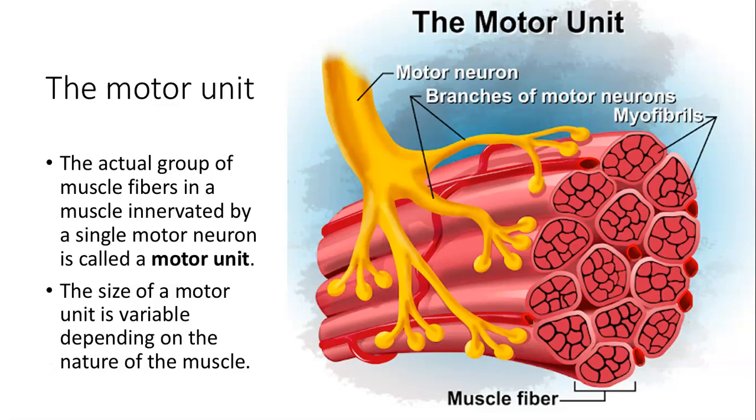A large motor unit is the arrangement where a single motor neuron will supply a large number of muscle fibers in a muscle. Those motor units are usually concerned with gross movements—and not gross as in disgusting, gross as in large. One example I can give you is powerfully extending the knee joint.